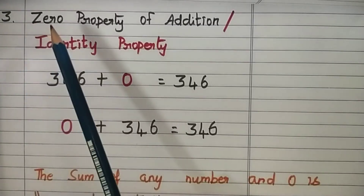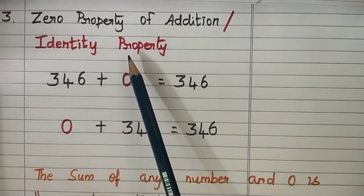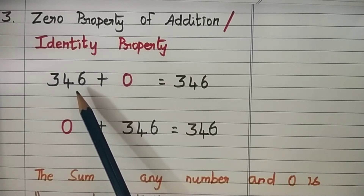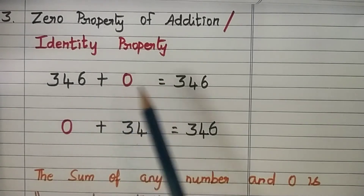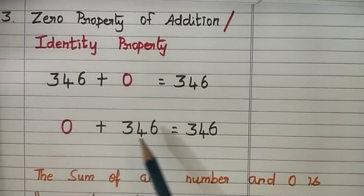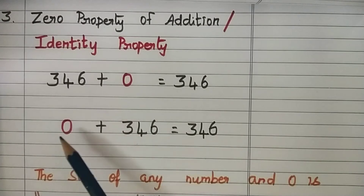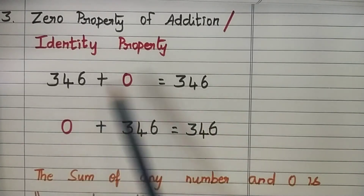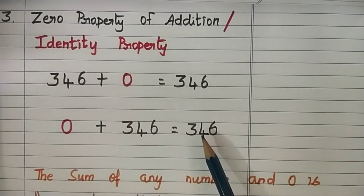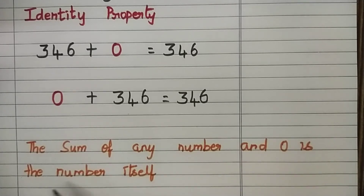Let us see the third property: zero property of addition, or you can call it the identity property. Let us see the example: 346 plus zero, we get the sum 346. When zero is added with 346, we get the sum 346. This tells us that when zero is one of the addends, the answer will be the number itself. Hence, we conclude: the sum of any number and zero is the number itself.